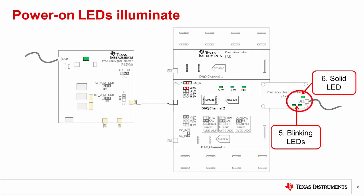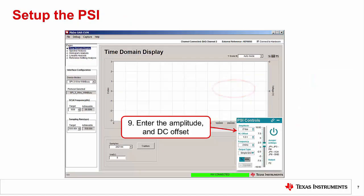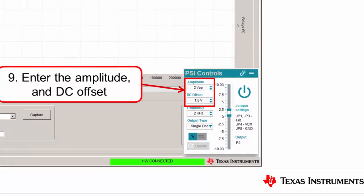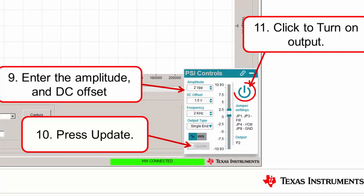When power is first connected to the PHI, you will see two blinking LEDs and one solid LED. The PSI will have one solid LED. Once the software boots up, you will notice the power LEDs on the PLABS board illuminate. Now let's set up the PSI. First, enter the peak-to-peak amplitude and the DC offset required. Let's start with 2 volts peak-to-peak and a 1.5 volt offset for this experiment. Next, press Update to save the changes. Finally, click on this button to enable the PSI output. Note that the output is enabled when it is the teal color as shown and it is disabled when it is red.